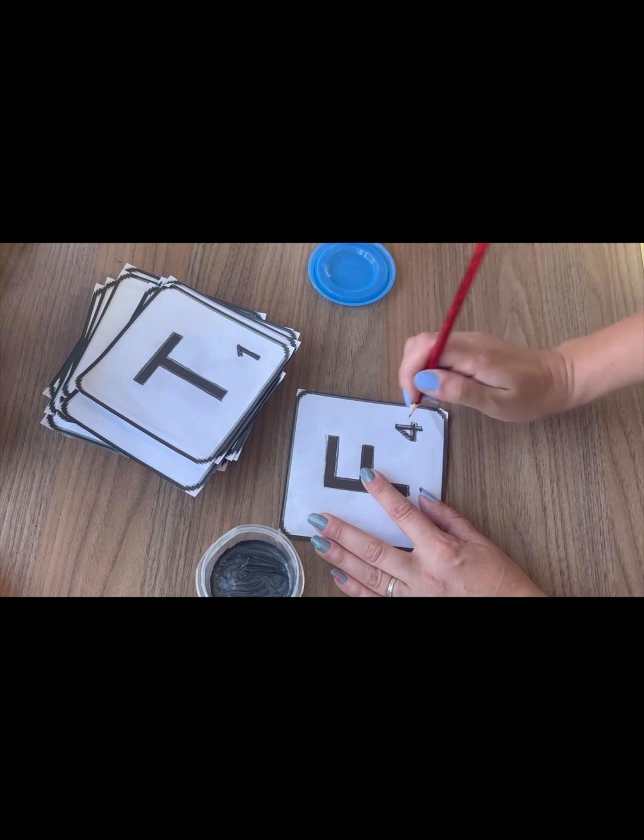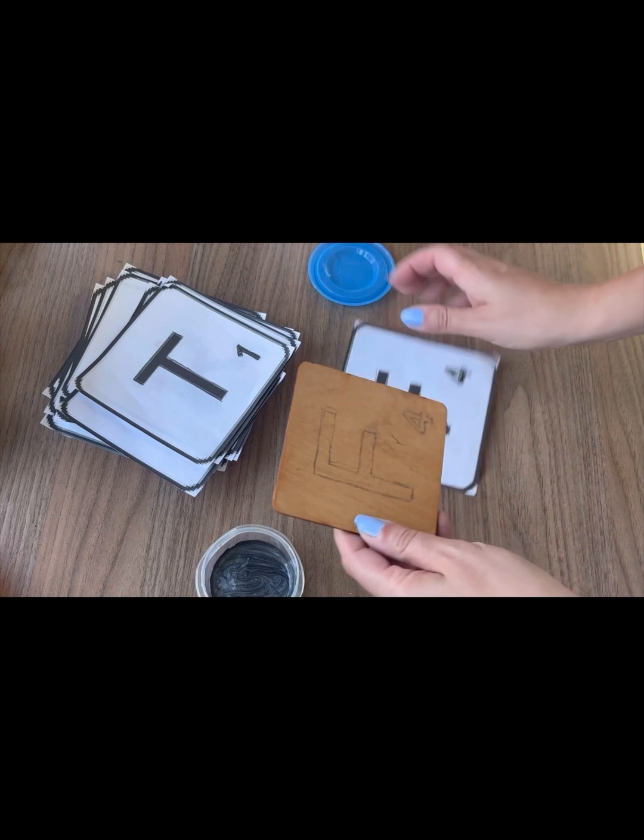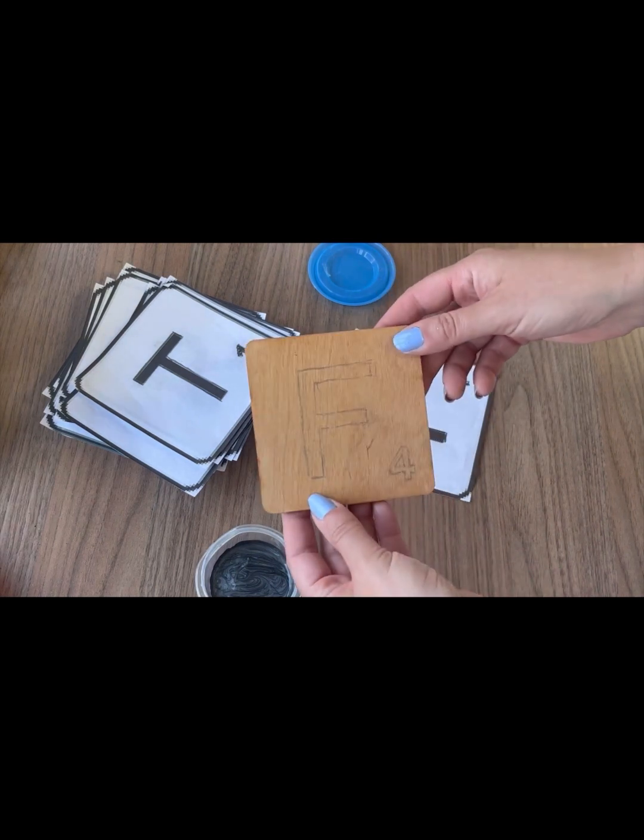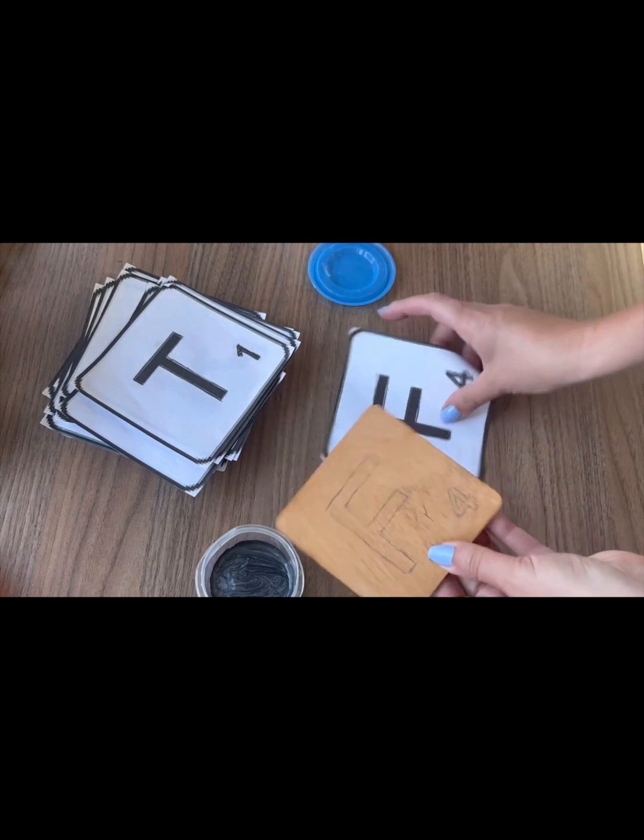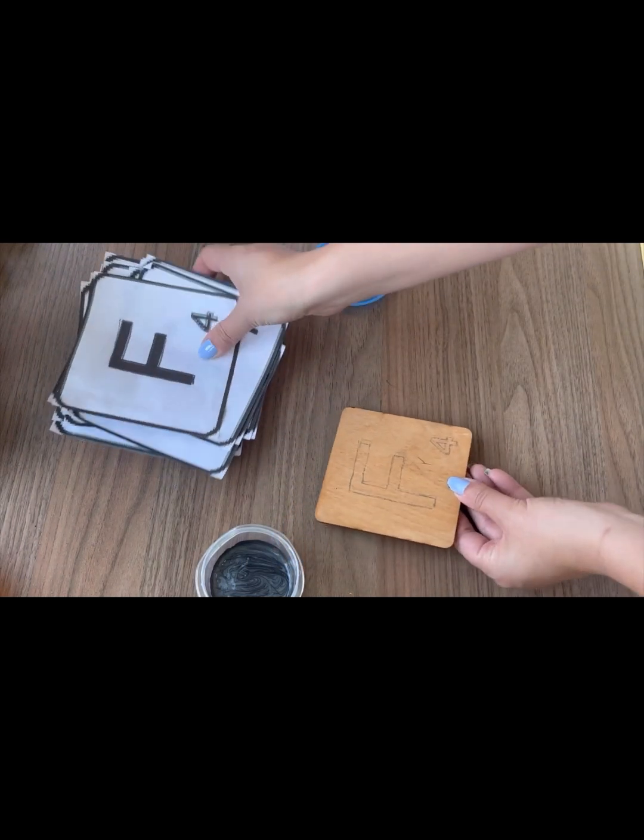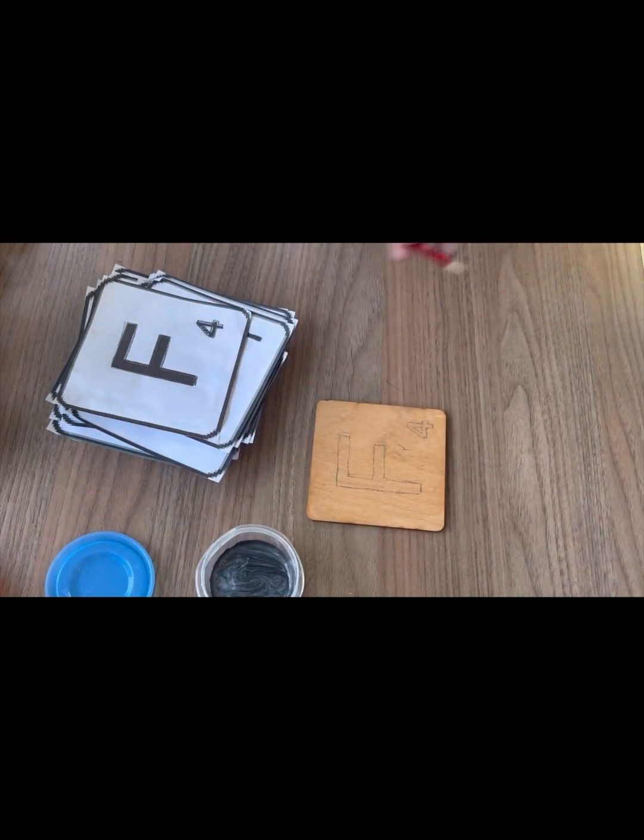You might need to press quite hard sometimes to go through, and what that will do is it will transfer, and there you go. You're left with a shadow of the letter for you to be able to paint in. Then I'm going to go through all my tiles and start doing that and then painting over the top, so I will start that now.